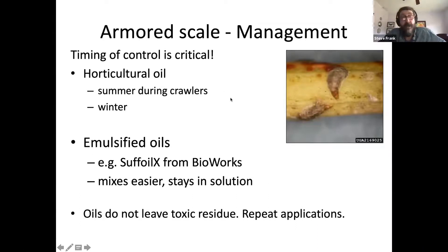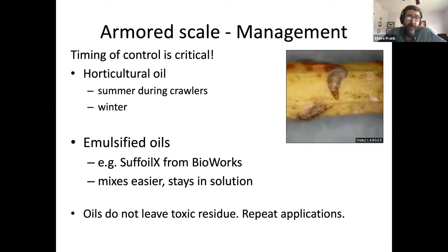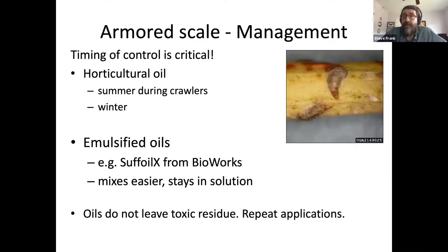Other products include horticultural oil — you can use it when crawlers are present, or apply a heavier formulation in winter to kill overwintering ones. There are also newer emulsified oils that mix easier, such as Suffoil-X from BioWorks. They stay in solution and don't leave a toxic residue, so you're not endangering natural enemies and other non-target organisms. They do require repeat applications to make a dent in populations, especially if you have multiple generations per year.